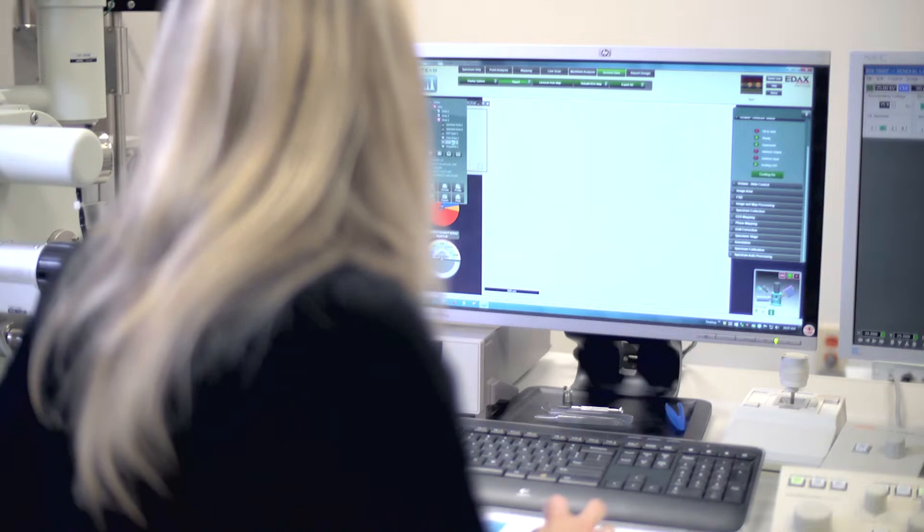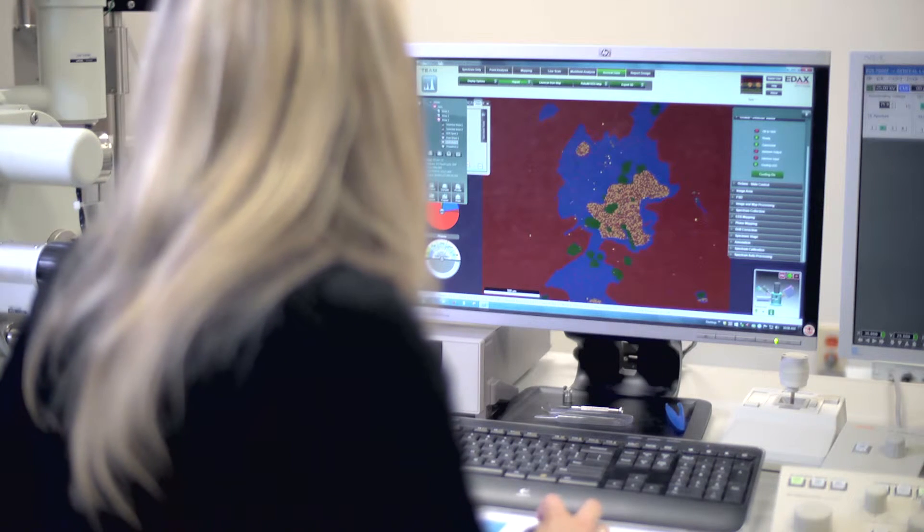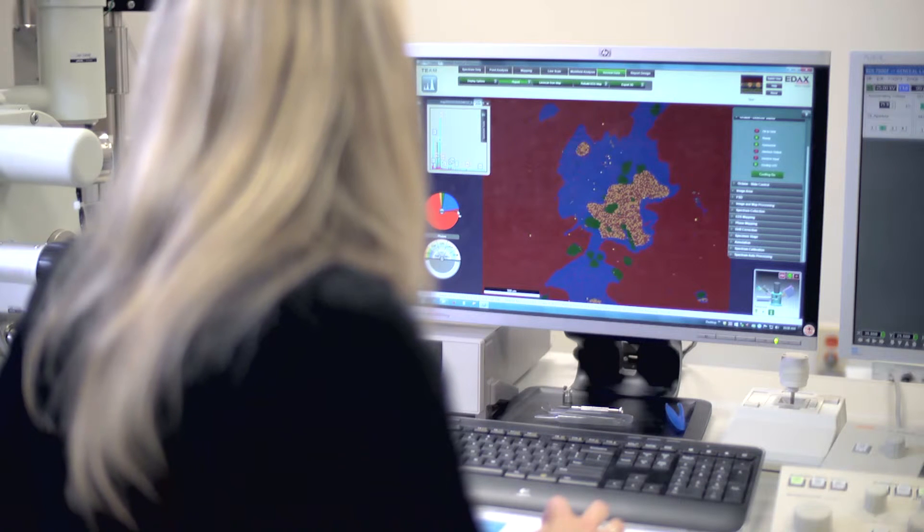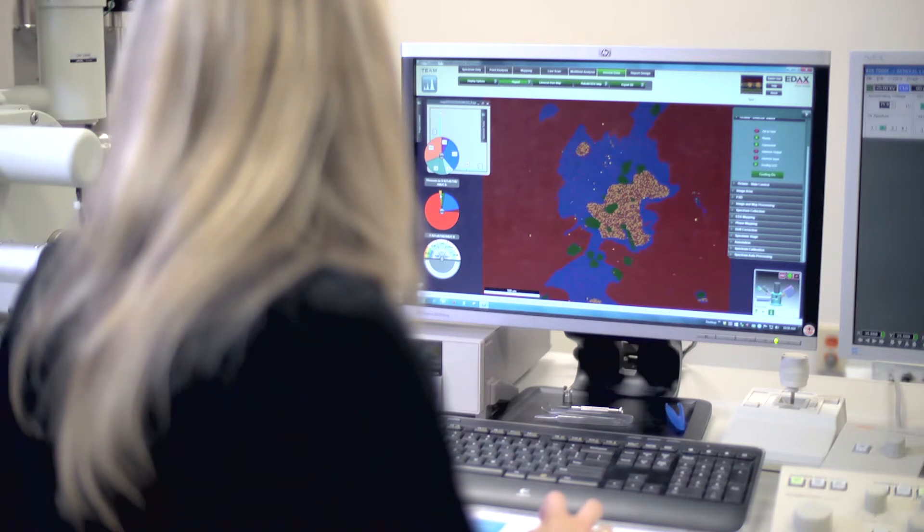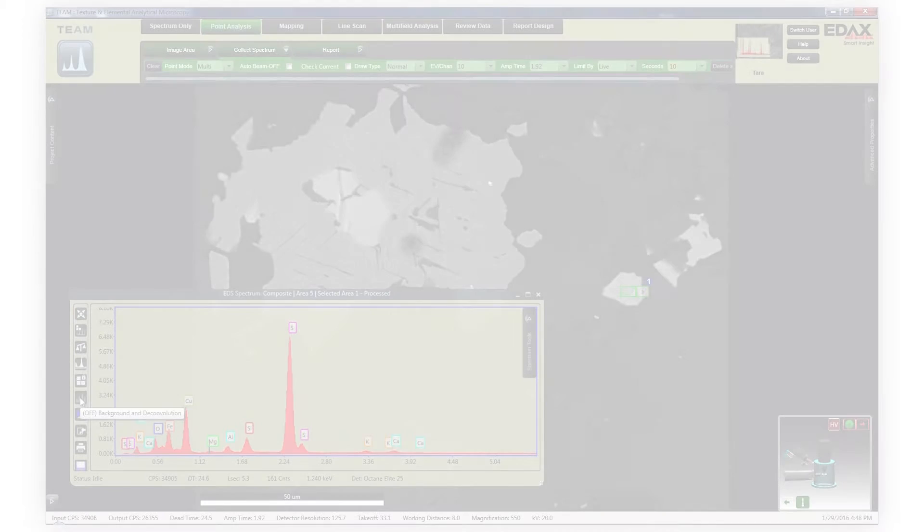Spectra can be collected across the specimen's image area, including individual points, multiple points, selected areas, freehand draw, and line scans. The line scans provide additional flexibility to customize the number of measurement points in a line.